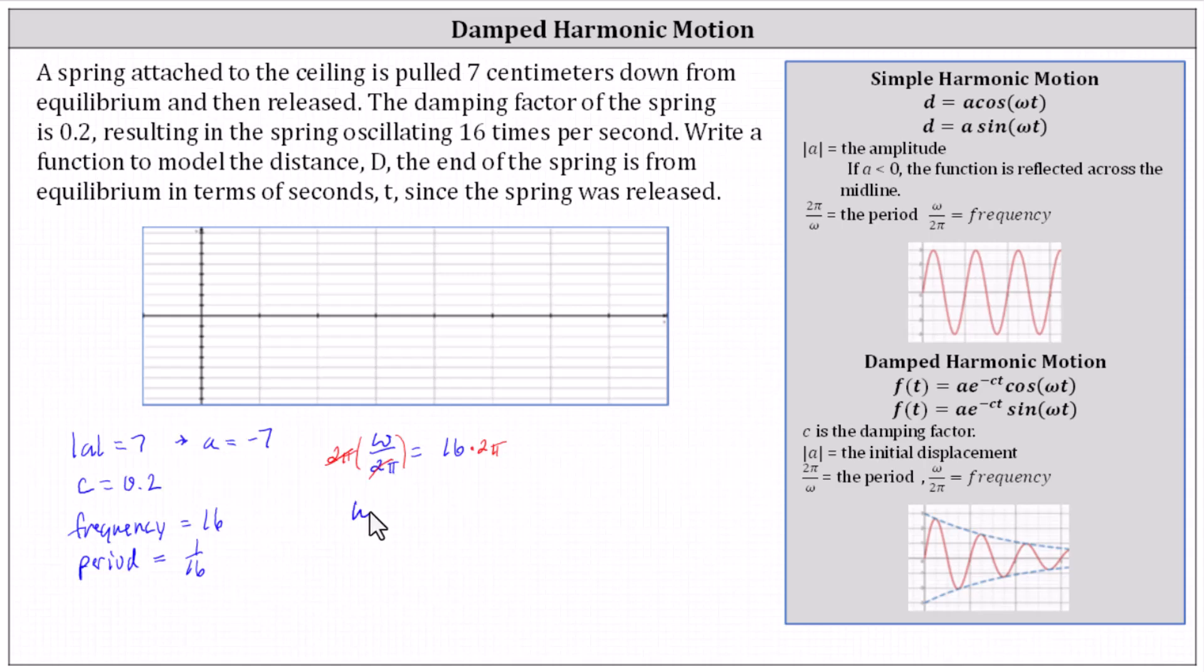Simplifying, we have omega equals 32 pi. Before we write the function, let's make a rough graph of the function over two periods, or 2/16ths, which equals 1/8th.